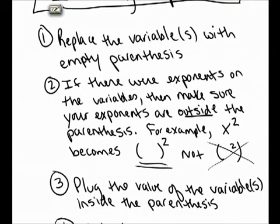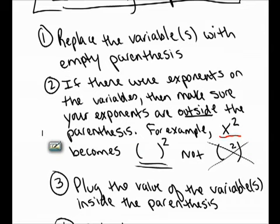If there are exponents on your variables, you have to make sure that you put those exponents on the outside of the parentheses. For example, if you start with x squared, you'll remove the x and replace it with empty parentheses — it's empty parentheses squared. You do not put that square inside the parentheses.